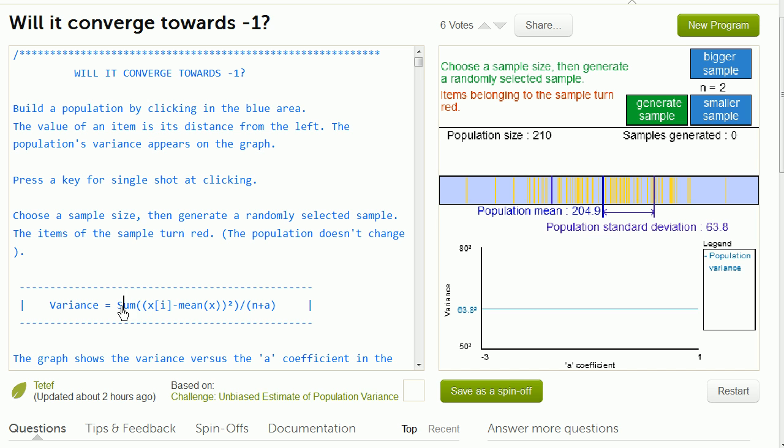So the numerator is going to be the sum of each of my data points in my sample minus my sample mean, and I'm going to square it. And then it's going to divide it by n plus a.